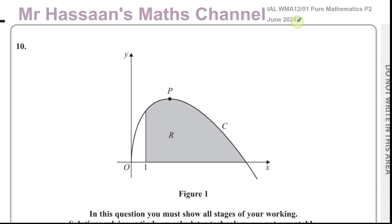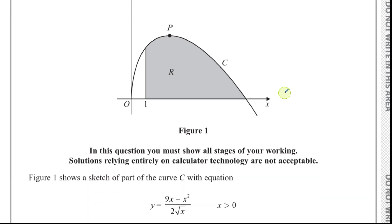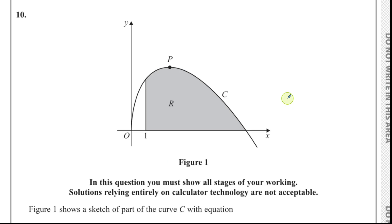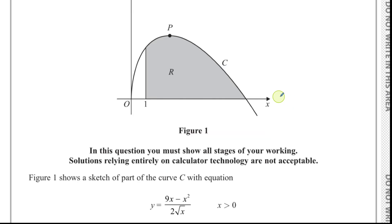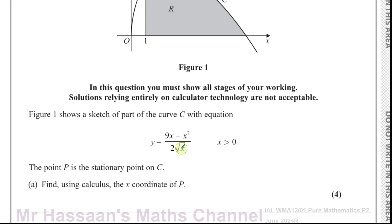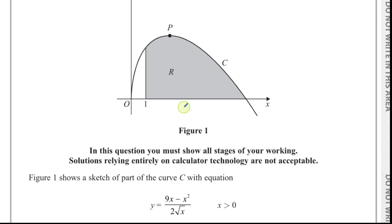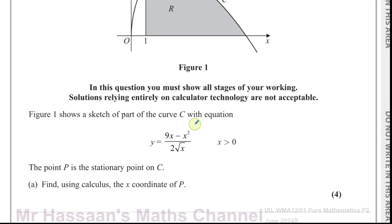This is the June 2024 R paper. We have a question which tells us about the sketch of a curve C, which has equation y equals 9x minus x squared over 2 root x, where x is greater than zero. The point P is the stationary point of the curve. Find using calculus the x coordinate of P.